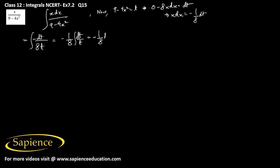So this will be -1/8 into log mod t plus c. So this will be equal to -1/8 into log mod of (9 - 4x²) plus c.